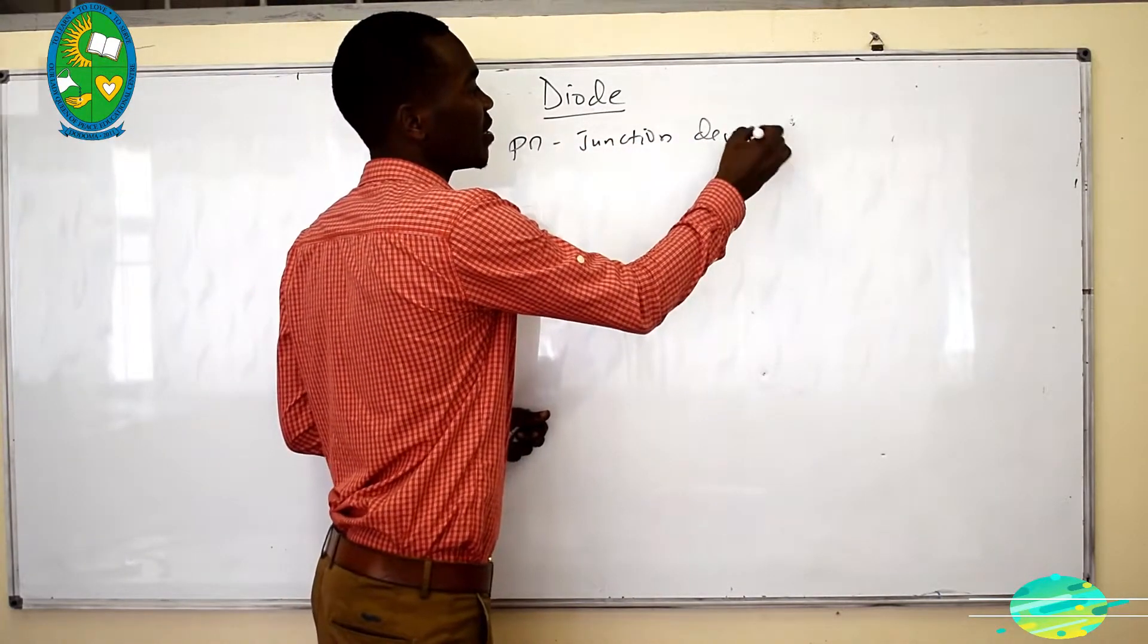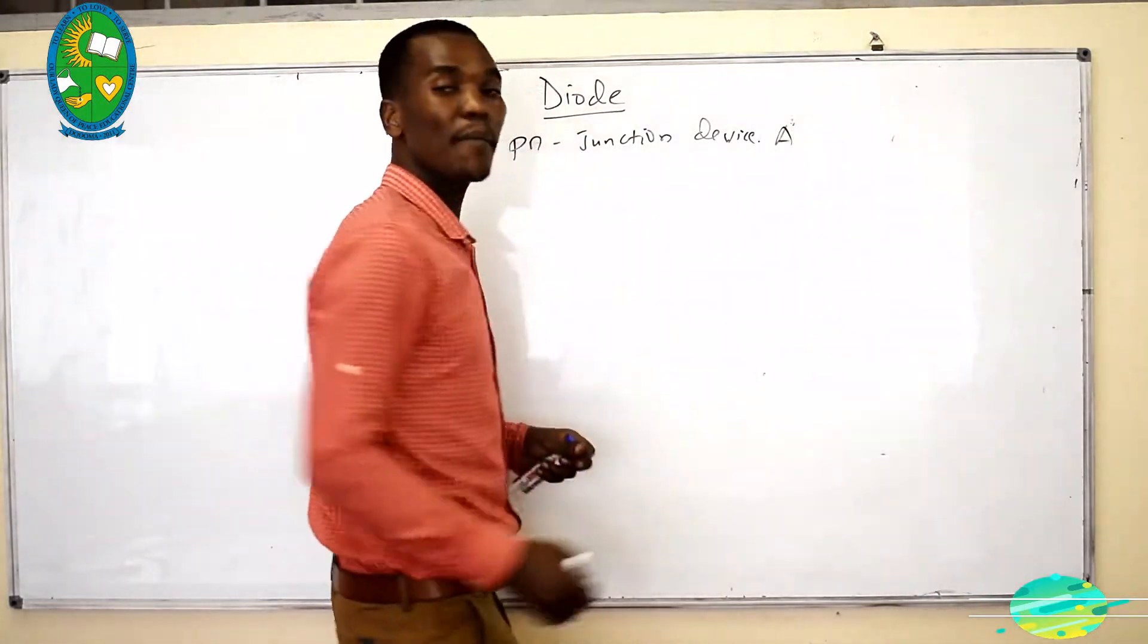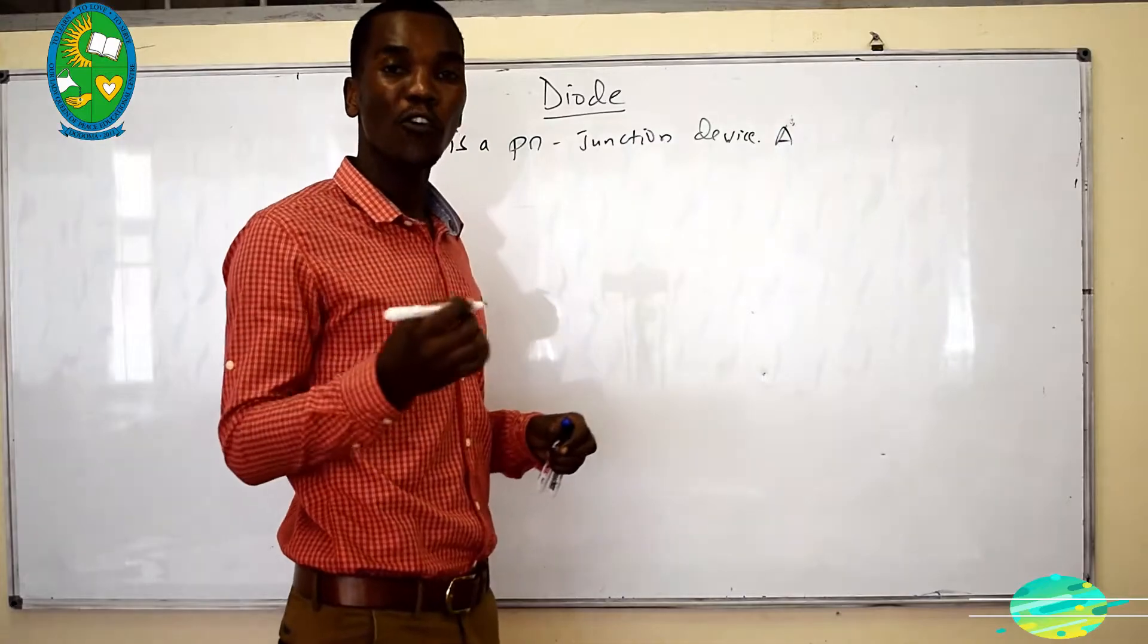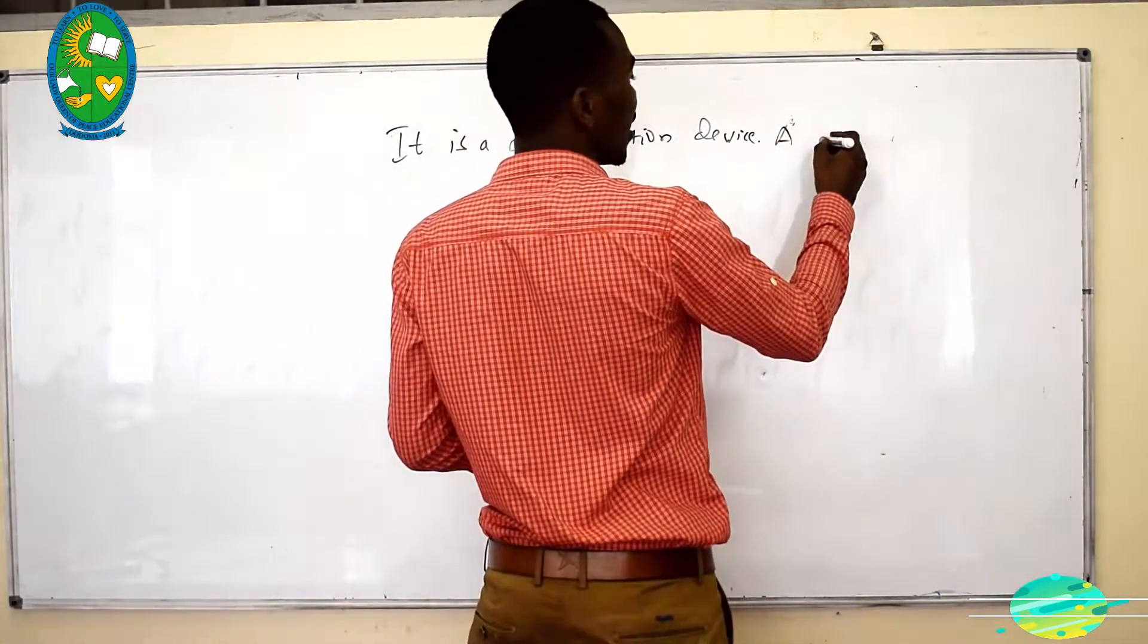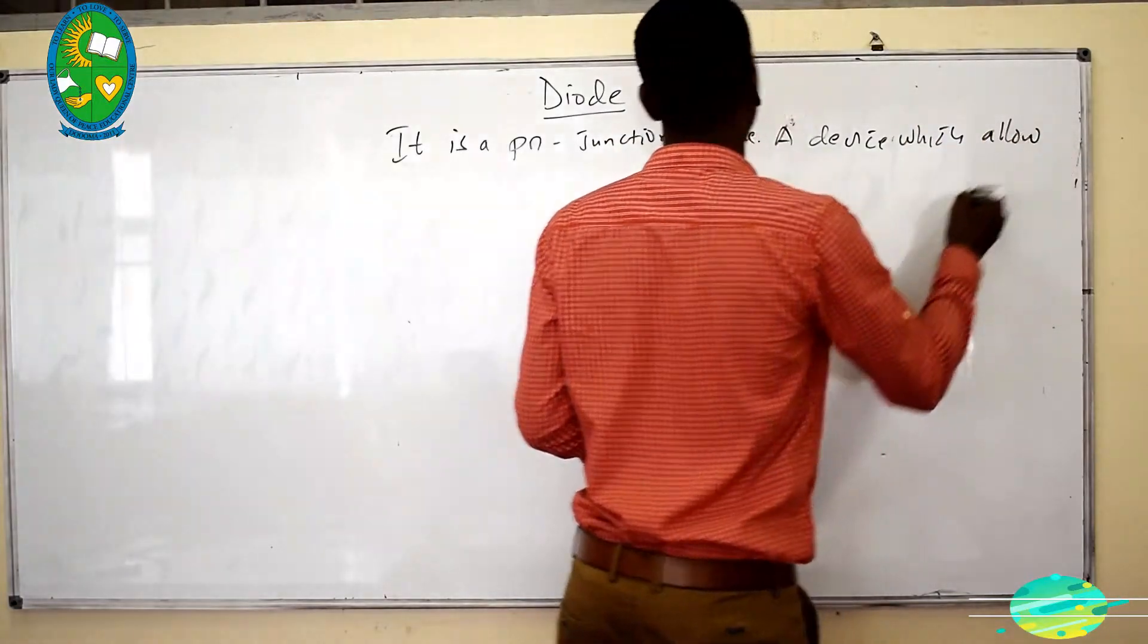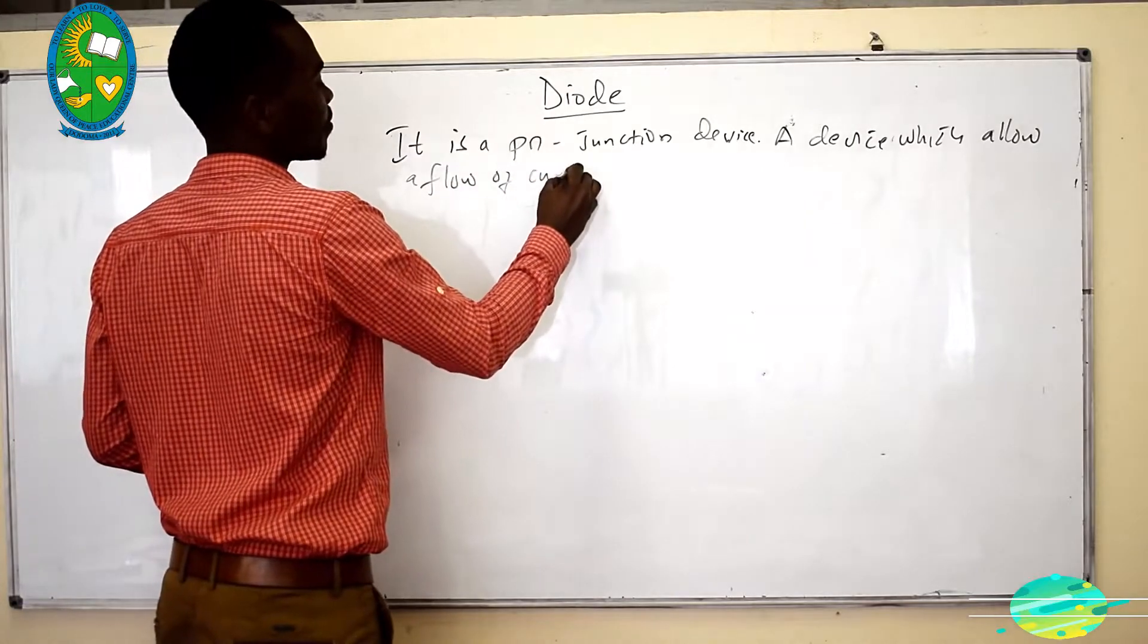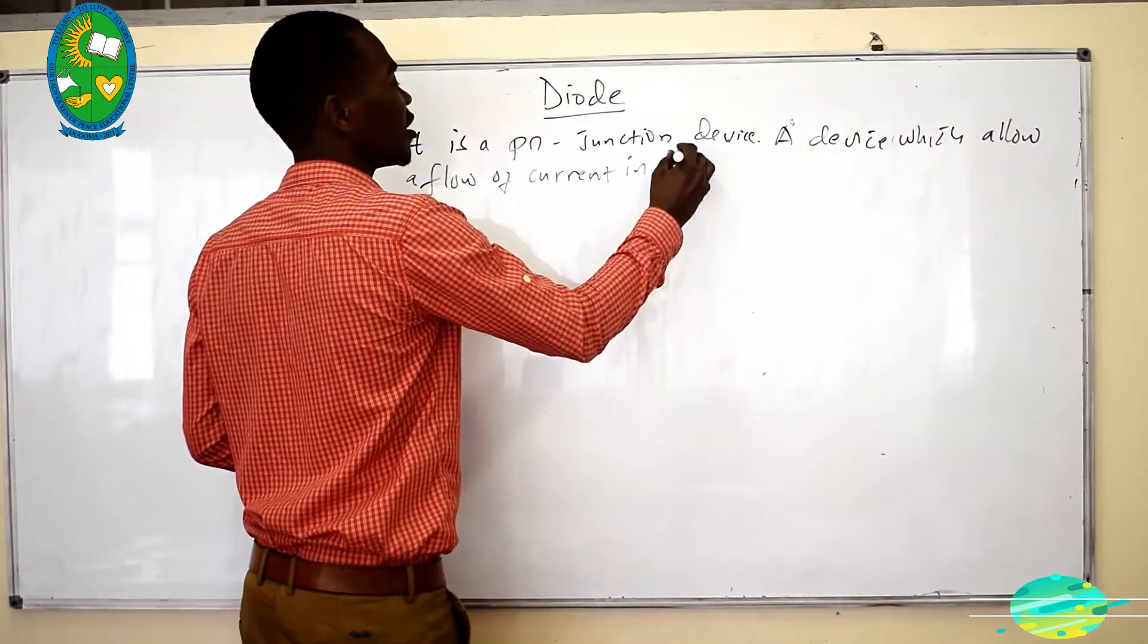When they are talking about diode, they are talking about a material which allows a flow of current in one direction only. A device which allows a flow of current in one direction only.